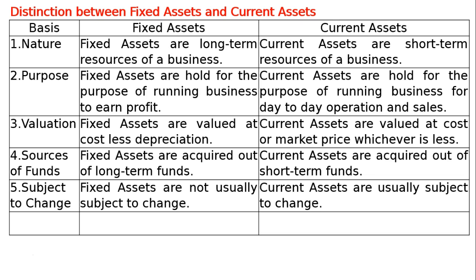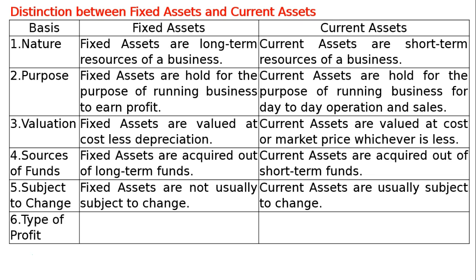The sixth basis is Type of Profit. In case of Fixed Assets, Fixed Assets if sold result in capital profit. In case of Current Assets, Current Assets if sold result in trading or revenue profit.